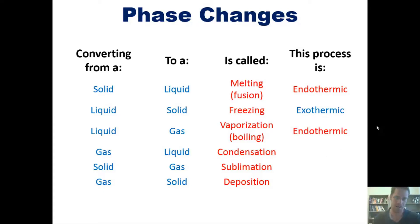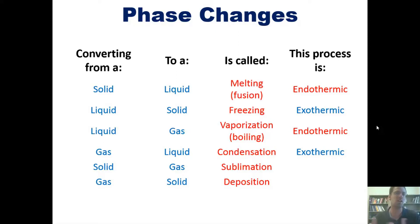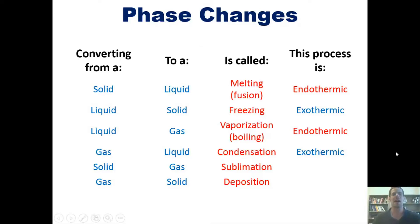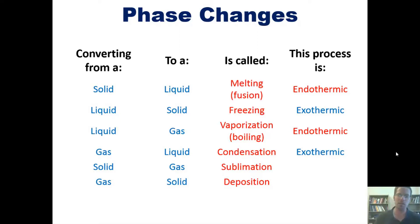But the exact opposite process — converting back from a gas into a liquid — is exothermic. Have you ever held your hand above a boiling pot of water and had steam touch your hand? It feels really hot, not cool. The reason is because at the surface of your hand, those individual gas molecules are condensing back into a liquid, and in that process they give off the same amount of heat per molecule as was required to convert them from a liquid into a gas. Therefore, converting from a gas to a liquid is exothermic.